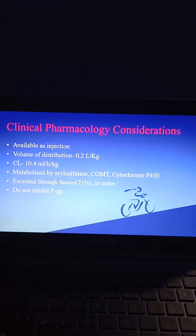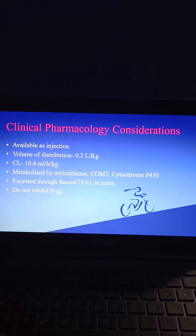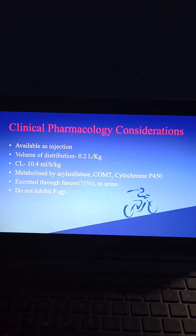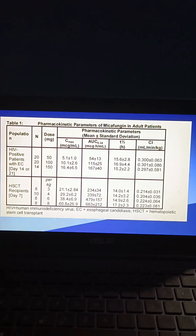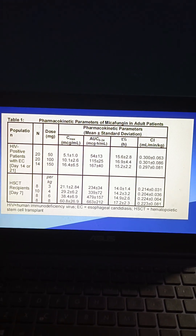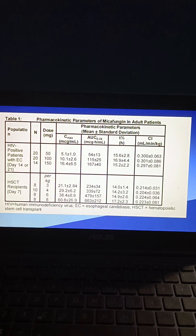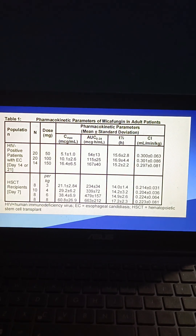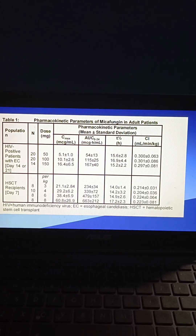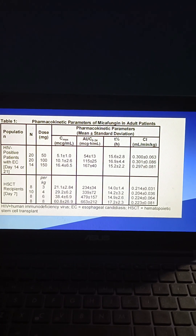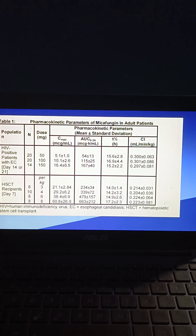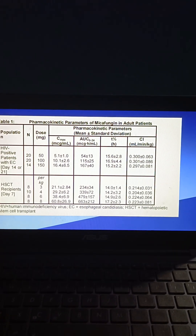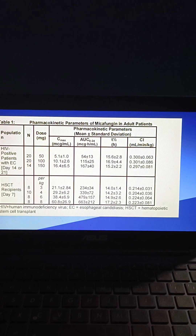Micafungin does not inhibit P-glycoprotein (P-gp). This is a table showing pharmacokinetic parameters of micafungin in adult patients. In case of HIV-positive patients with esophageal candidiasis, the C-max, AUC0-24, T-half, and clearance values are given here.